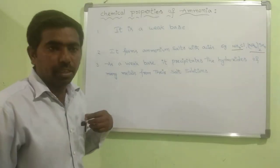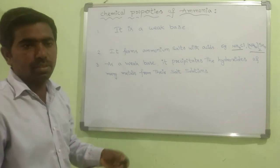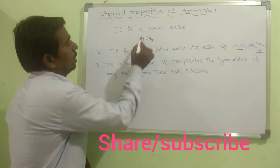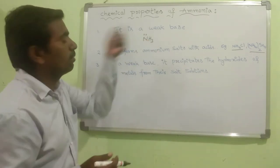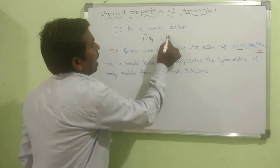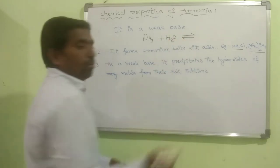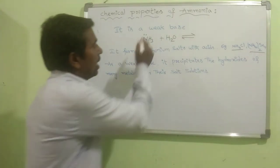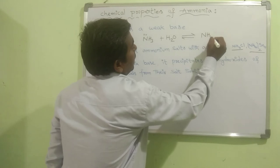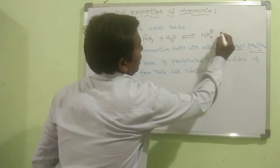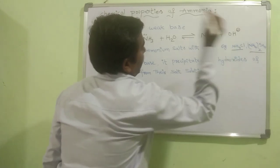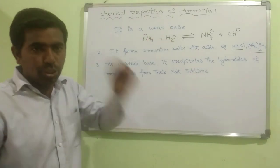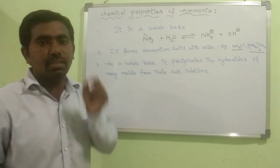Now, the chemical properties of ammonia. First, it is a weak base. In the ammonia molecule, nitrogen has one lone pair of electrons. When ammonia dissolves in water, it accepts one H⁺ from H₂O, converting into NH₄⁺, while the remaining species from the water molecule is OH⁻. From this, we can say ammonia accepted one H⁺ from H₂O, so according to Brønsted-Lowry theory, it acts as a base. Therefore, ammonia is a weak base.